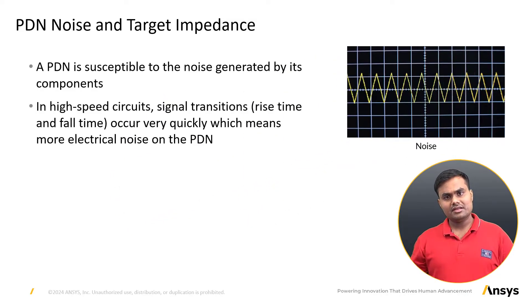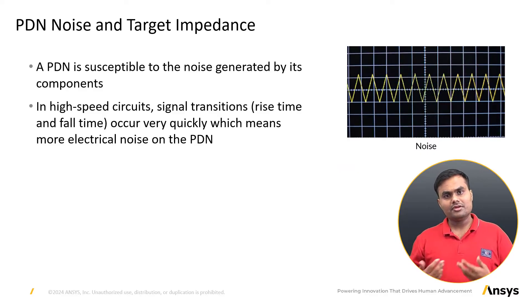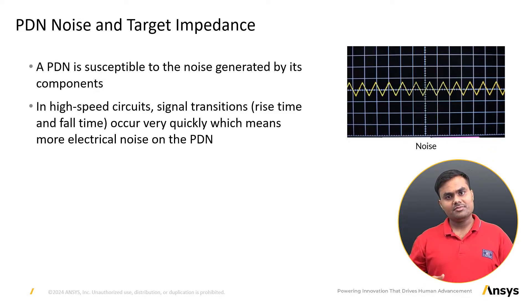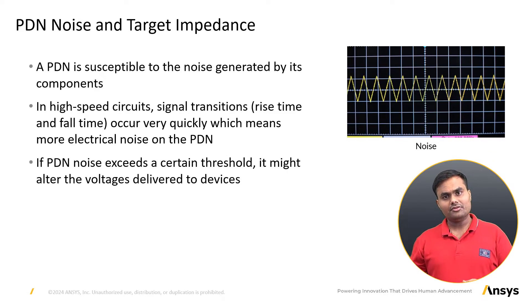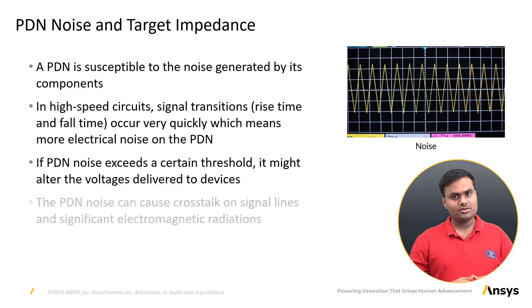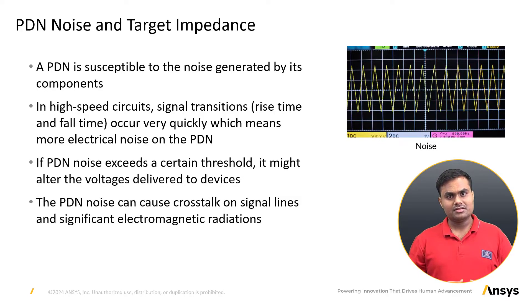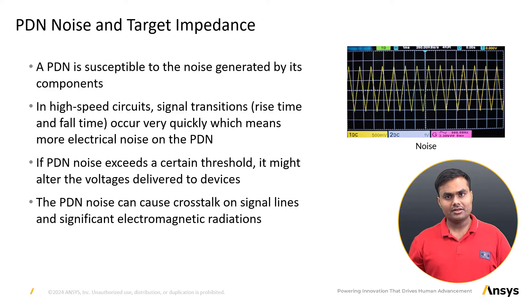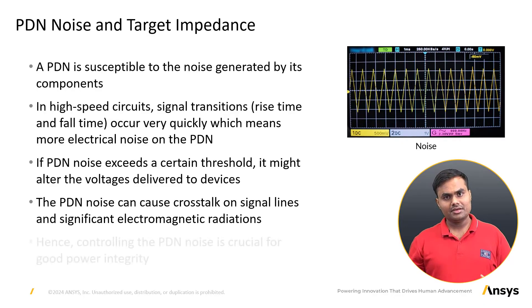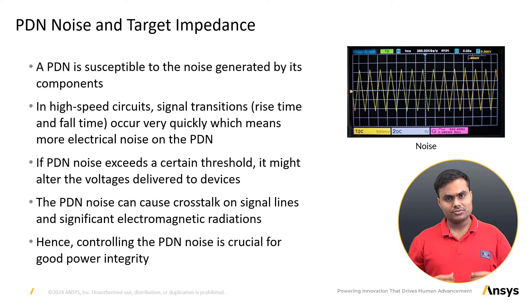In high-speed circuits, signal transitions — rise time and fall time — occur very quickly. The more transitions, the greater the electrical noise on the PDN. If PDN noise exceeds a certain threshold, it might alter the voltage delivered to devices. PDN noise can cause crosstalk on signal lanes. PDN supply rails are the largest conductors, and PDN noise can potentially cause significant electromagnetic radiation. For good power integrity, controlling PDN noise is crucial, and to do so we must analyze its sources and causes.